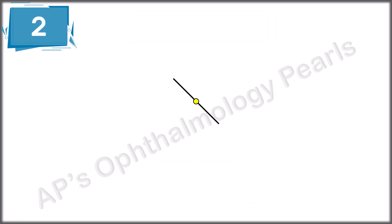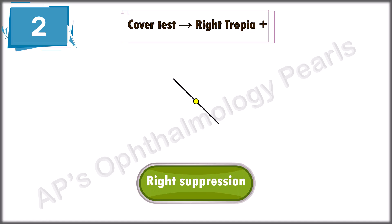Scenario 2. This is what the patient sees. A single light, so no diplopia. In fact, only the line from the left eye is seen. Cover test shows the presence of a tropia. So, this is a case of a right tropia with suppression.